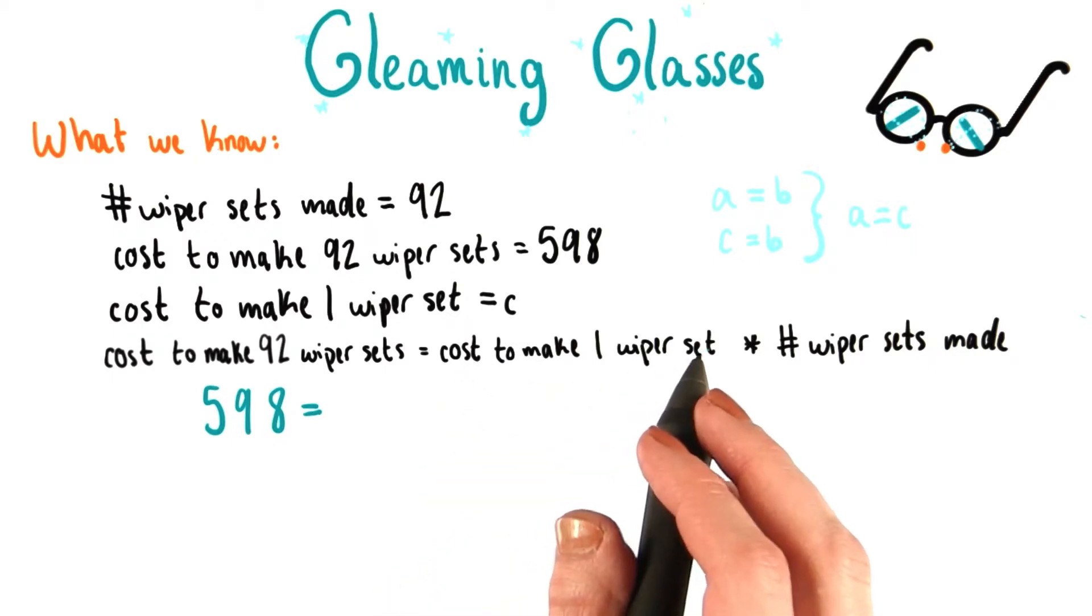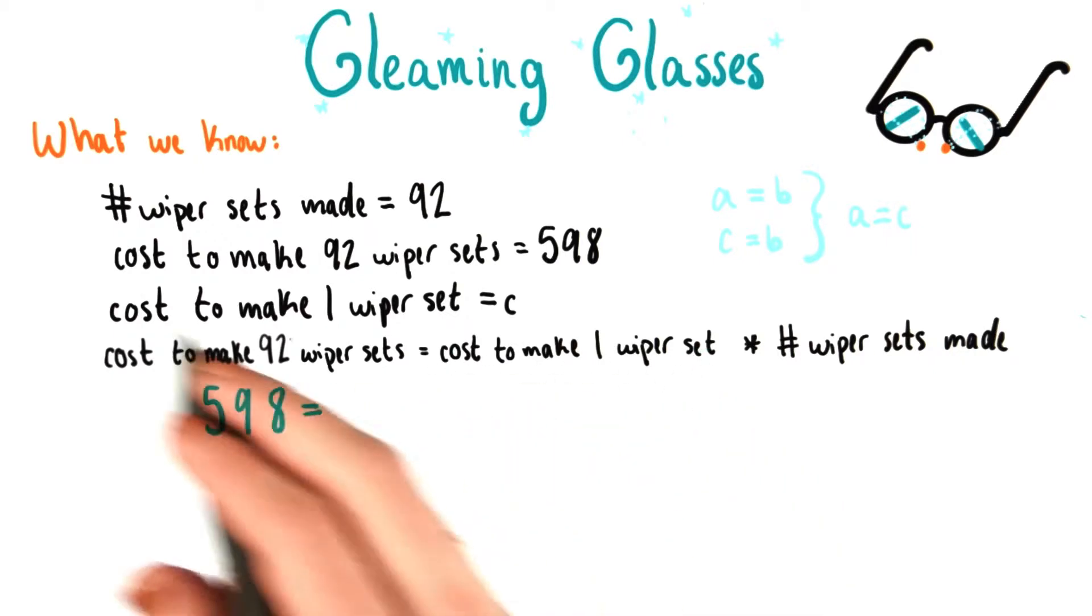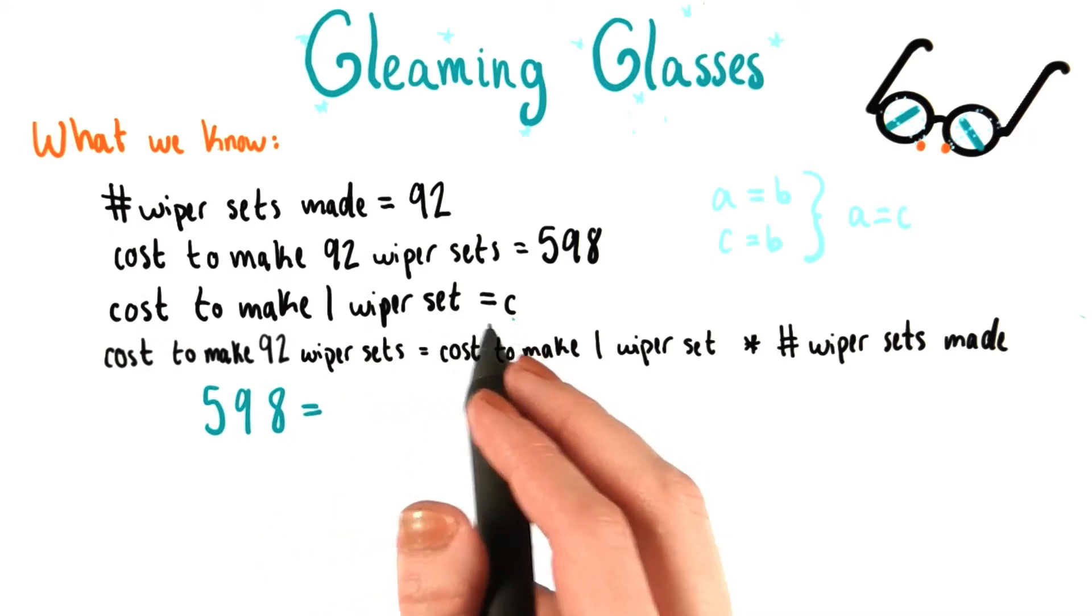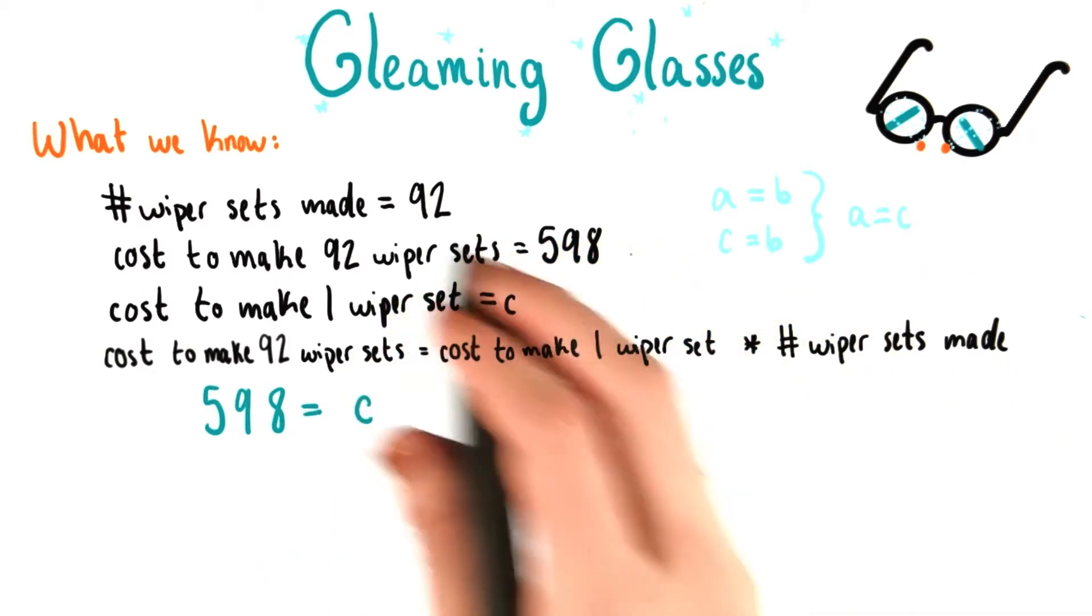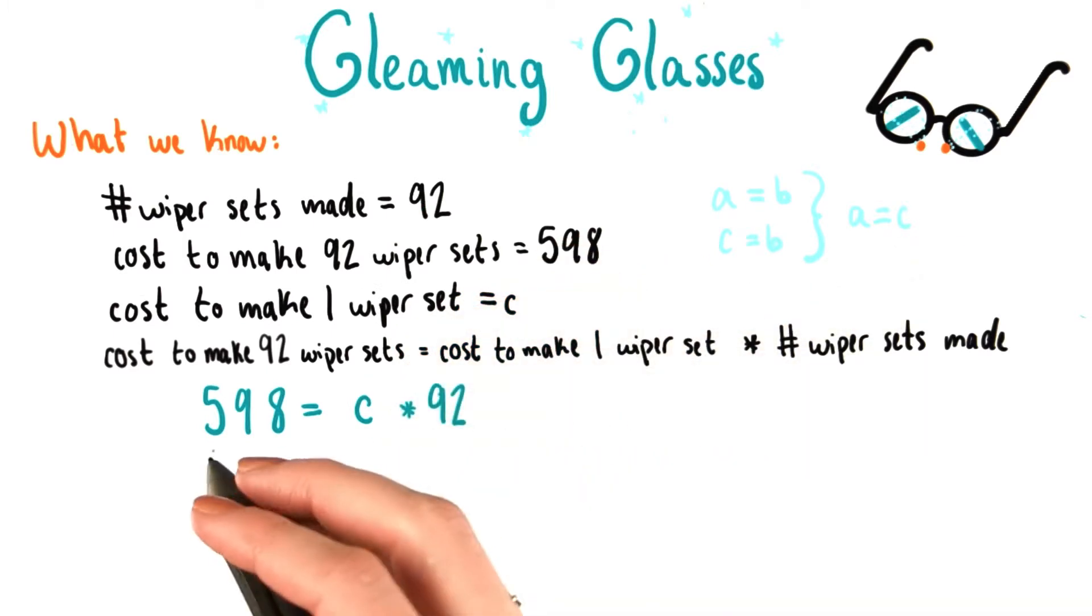We see the cost to make 1 wiper set, both here in the last equation, and also here that it's equal to c. So we'll substitute c in, and the number of wiper sets made is 92. Now we have an equation, 598 equals c times 92.